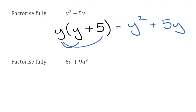The highest common factor of the number parts is technically 1 because we had 1y squared and 5y. The highest common factor would be 1, but we know we don't need to write 1y — we can just leave that as y.